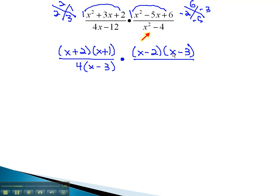In the denominator, we notice we have a difference of squares. This will factor to the sum and the difference of the square roots. This will be x plus 2 times x minus 2.